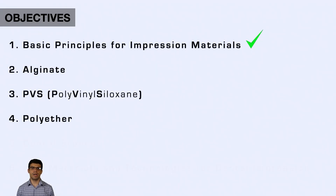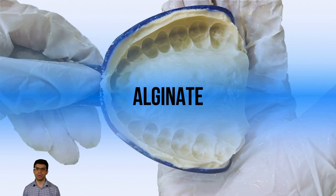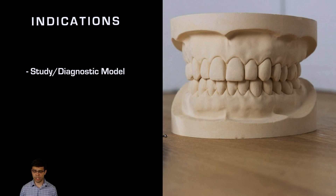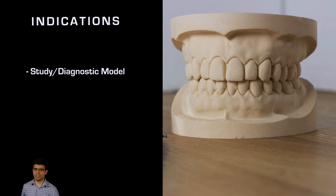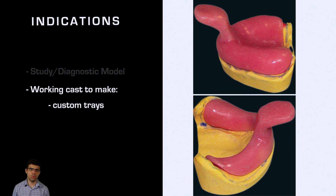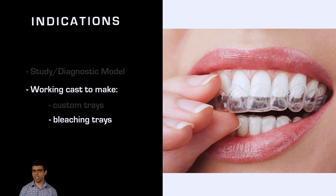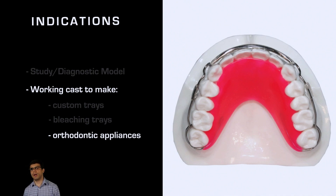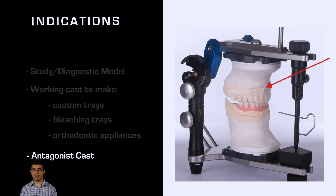The alginate material is indicated for study and diagnostic models. You should not use it for final impressions. It can be used to make working casts for custom trays, for bleaching trays since they don't require much precision, for orthodontic appliances, and as an antagonist cast. If you have a cast you want to use as the opposing model, you can use alginate for that as well.